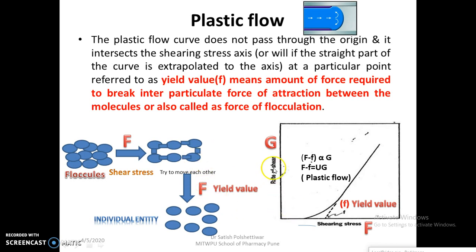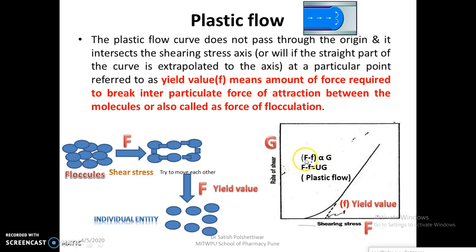To visualize plastic flow, plot rate of shear versus shearing stress. At low stress, there is no particle movement; at a second level, particles slowly begin to separate into individual entities. The graph shows this characteristic shape. This difference — from no flow to flow — is called the yield value (f). The formula is: shearing stress minus yield value (F − f) is directly proportional to the rate of shear G. This gives us the plastic flow curve.